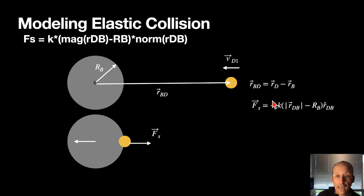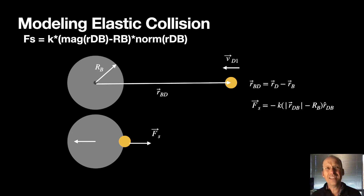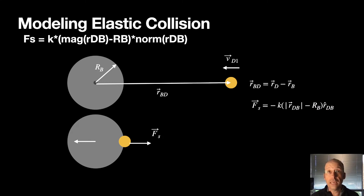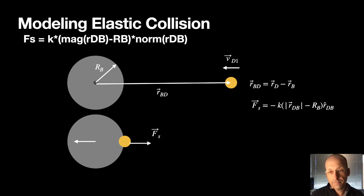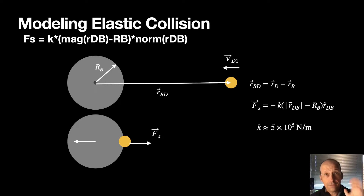The spring force has some spring constant k — this is not a real spring, I'm just making it up, but it works fine. It depends on how much the spacecraft has penetrated inside the radius of the asteroid. I multiply by an R-hat to make it a vector force — that's important. So: if the two overlap, there's a spring force pushing them apart; if they don't overlap, the spring force is zero. You'll probably need a very large spring constant because a 570-kilogram spacecraft at 6 kilometers per second takes a lot to stop.